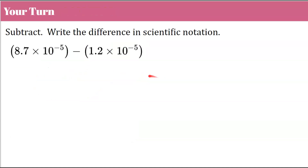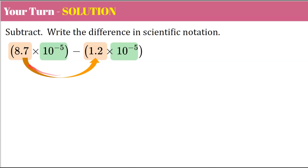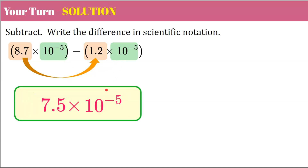Let's try a subtraction problem. Pause here and write the difference in scientific notation. Welcome back. Here we're subtracting. The powers are the same, so we don't have to do anything. Look at the factors and subtract: 8.7 minus 1.2 is 7.5, keeping our power. Check: the digit to the left of the decimal is greater than or equal to 1 and less than 10. This value in scientific notation represents the difference.